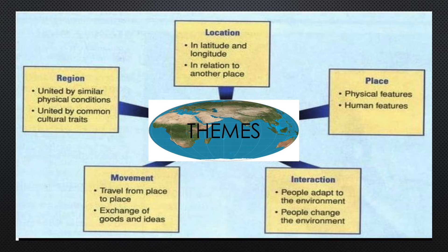Geography is concerned with human-environment interactions in the context of the themes of specific places: location, region, interaction, spatial distribution and differentiation of features. Explanation of current situations comes from both historical and contemporary sources. Trends can be identified which indicate possible future developments.